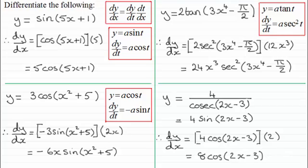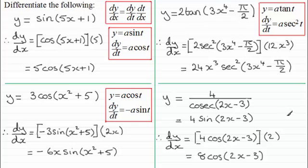Hopefully you can see how to differentiate functions like these using the chain rule. In the next video, I want to extend this work further by looking at powers of trigonometric functions — like y equals sine cubed of all of 5x plus 1, or y equals 3 cos squared of all of x squared plus 5. That requires a double application of the chain rule, so make sure you understand this first. That brings us to the end of this tutorial — I'll see you in the next one.